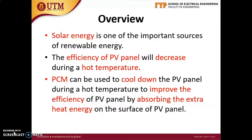Solar energy is one of the important sources of renewable energy. As we know, PV panels can capture the sun's energy and convert it into electricity. However, the efficiency of PV panels will decrease in hot climate countries such as Malaysia. Phase-change material PCM can be used to cool down the PV panel and improve its efficiency.